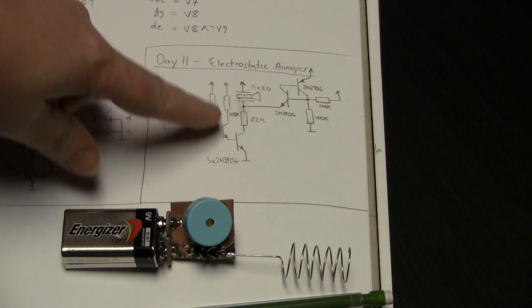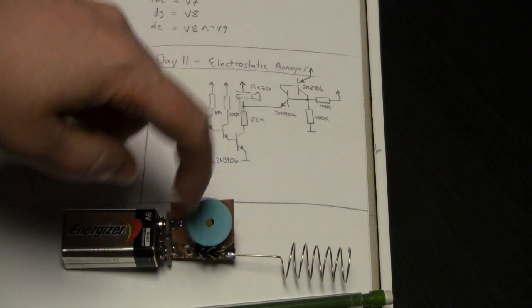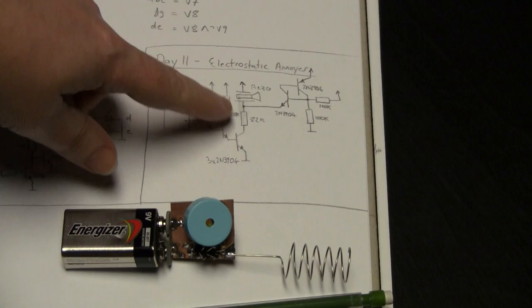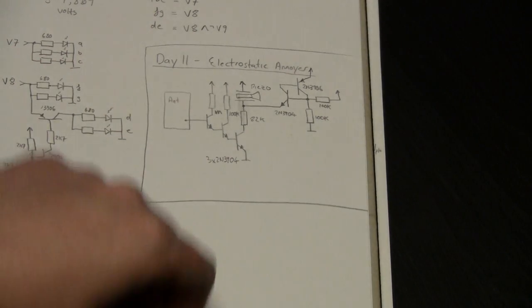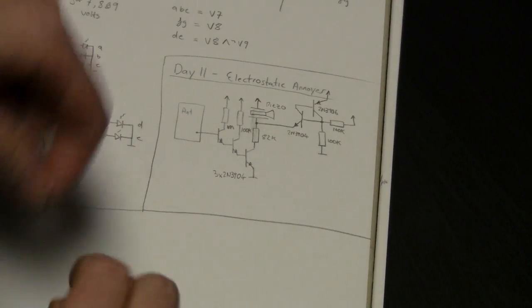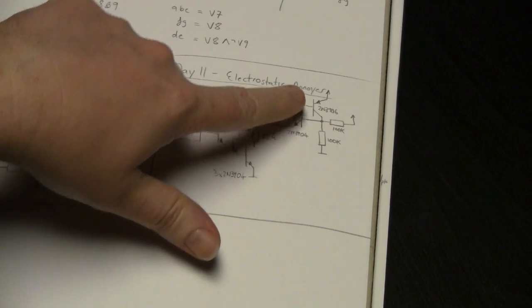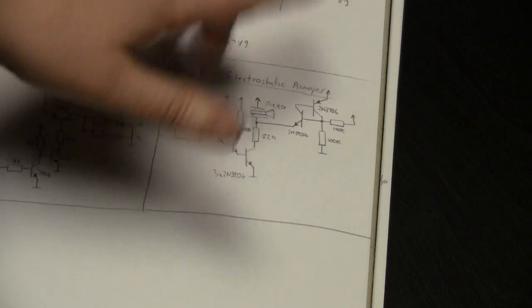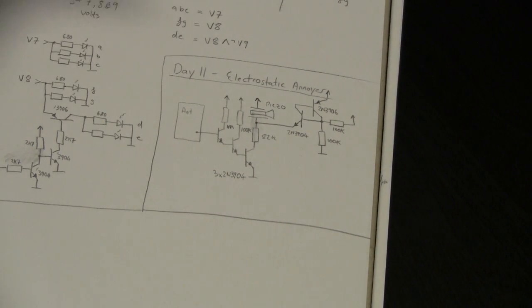And the last transistor is set up to pull current out of the piezoelectric speaker's capacitance, so much in the same way as I think it was day 9. We had something doing pretty much the same thing. We have a complementary pair here that has a set point of about mid-rail, so the whole thing runs off 9 volts. It's on top of a 9 volt battery, yet another 9 volt battery topper.